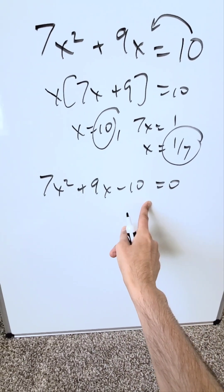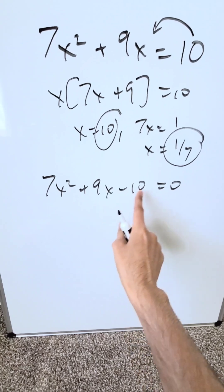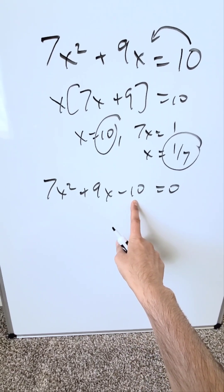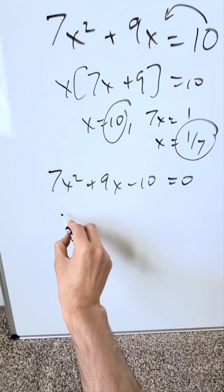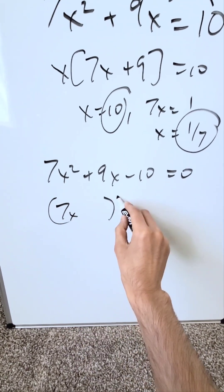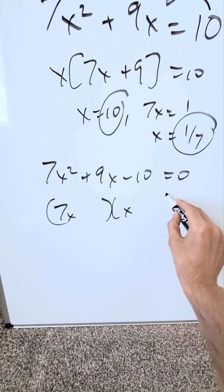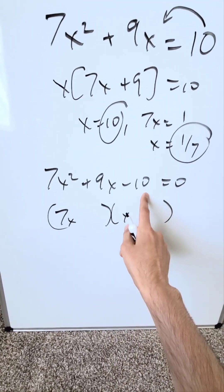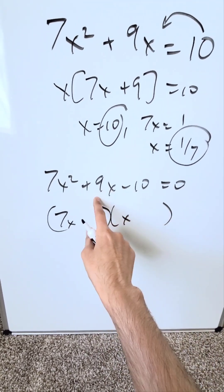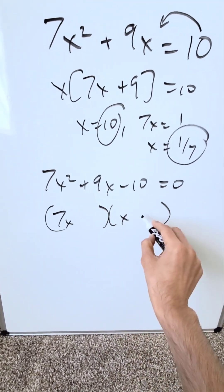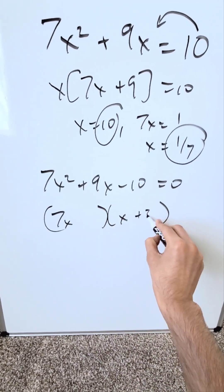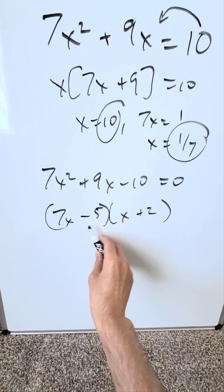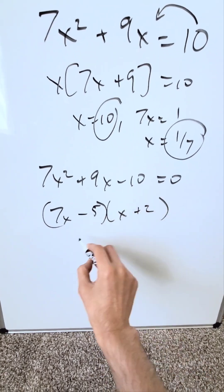Now you appropriately factor it, and the effect of 10 comes into play. Following the basic factoring procedure, you get factors with minus 10 and plus 9, working out to plus 2 and minus 5.